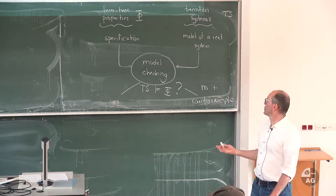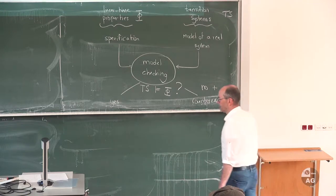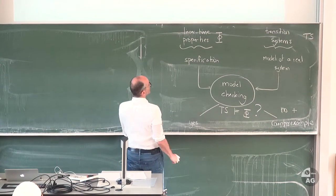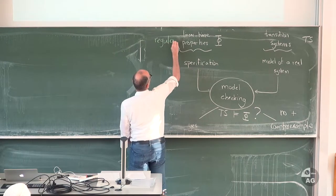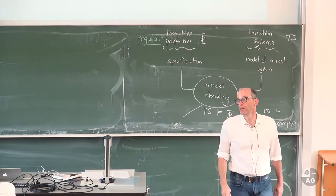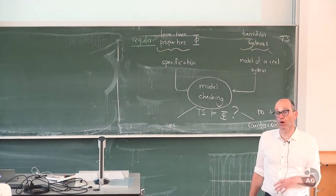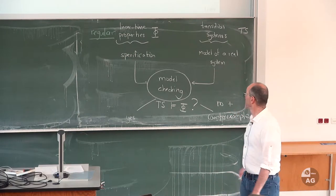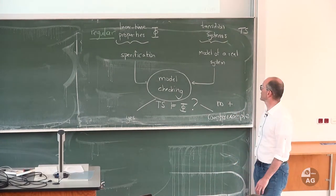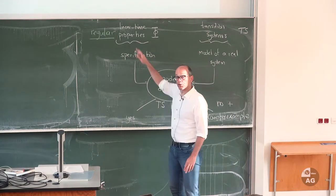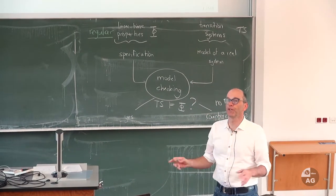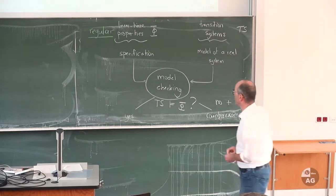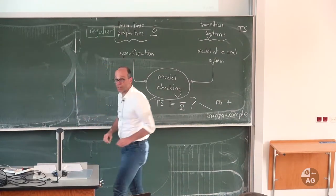In order to do that, I am going to focus on one specific type of property called regular properties. Today I am not going to talk about linear time properties in general, but we are going to consider regular linear time properties. We can use old-fashioned automata theory for doing the model checking for this specific type. Either at the end of today or in the next lecture, I am going to enlarge this set of properties and we will see that finite state automata are not sufficient anymore, and we need another automata model called Büchi automata.